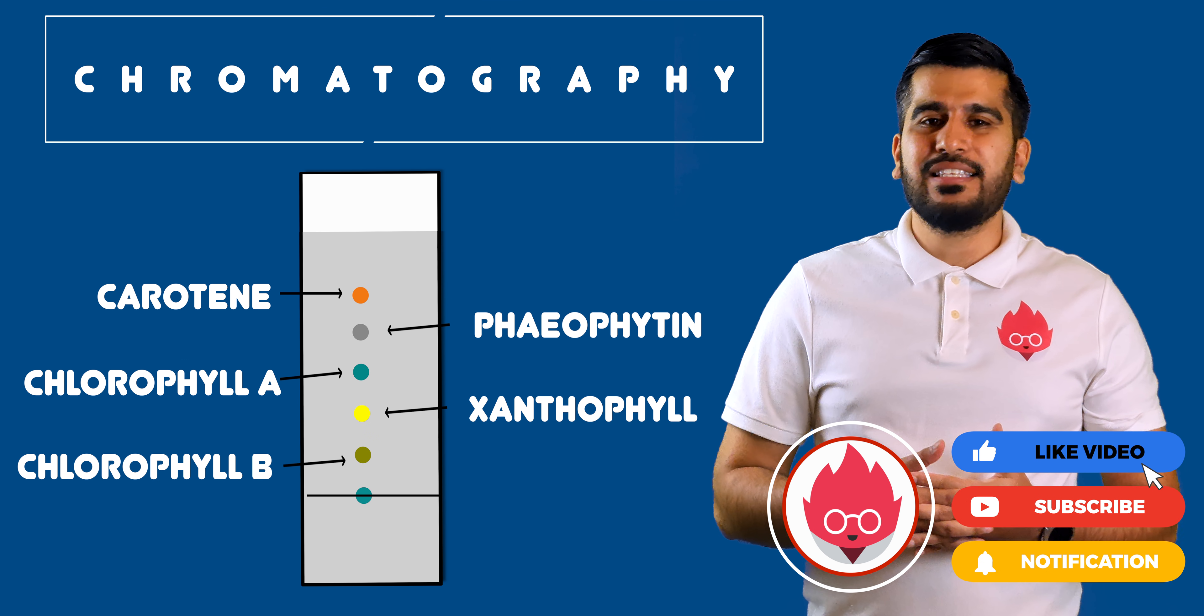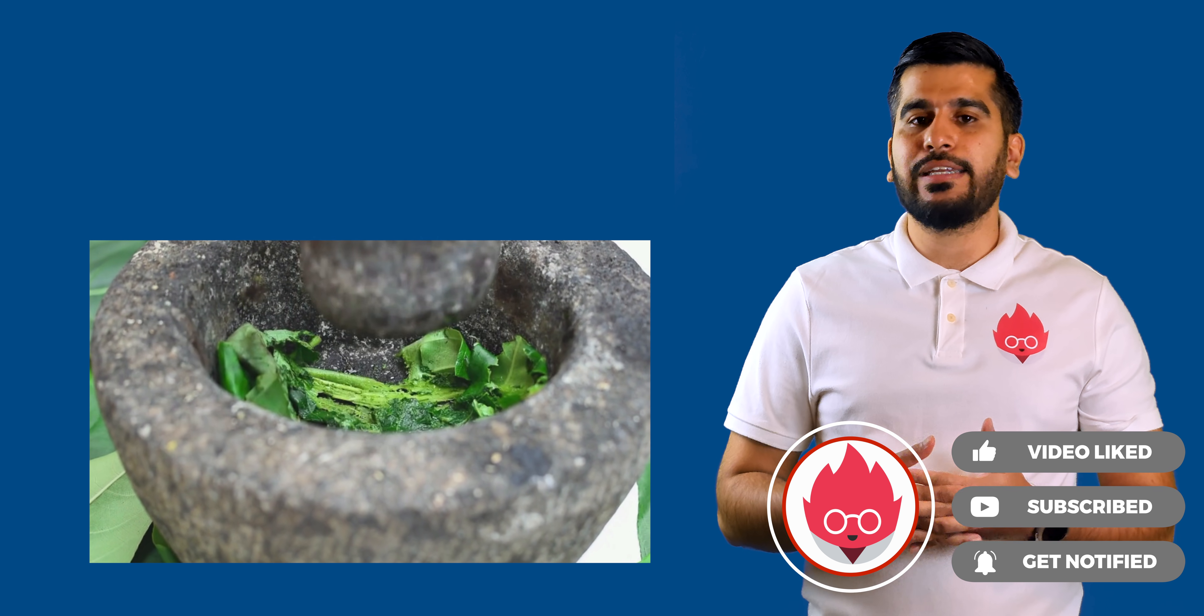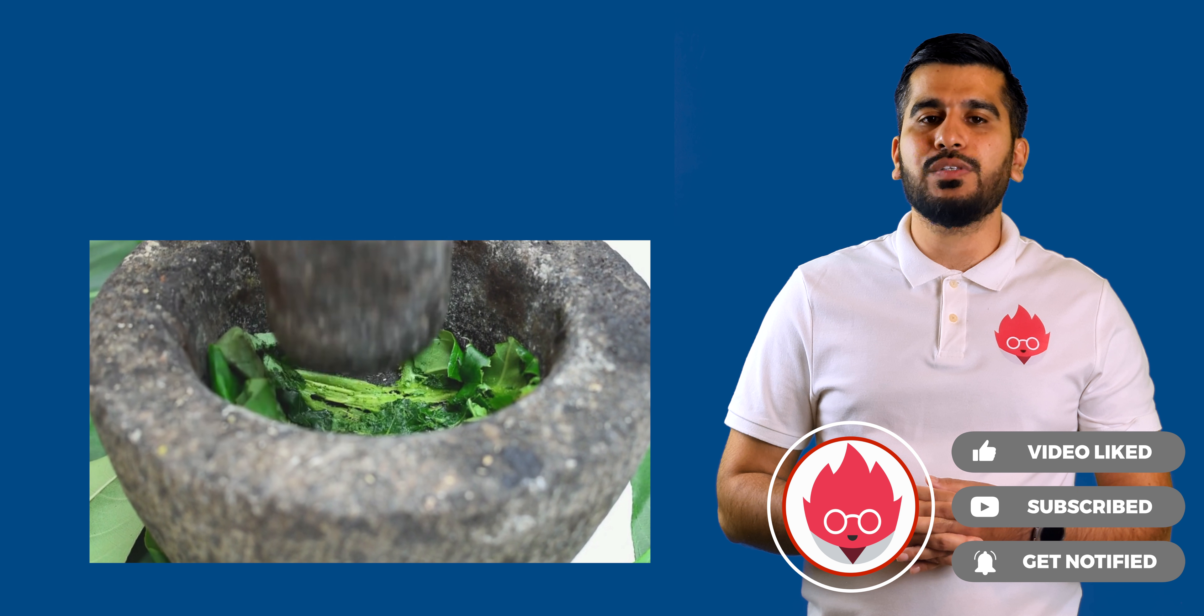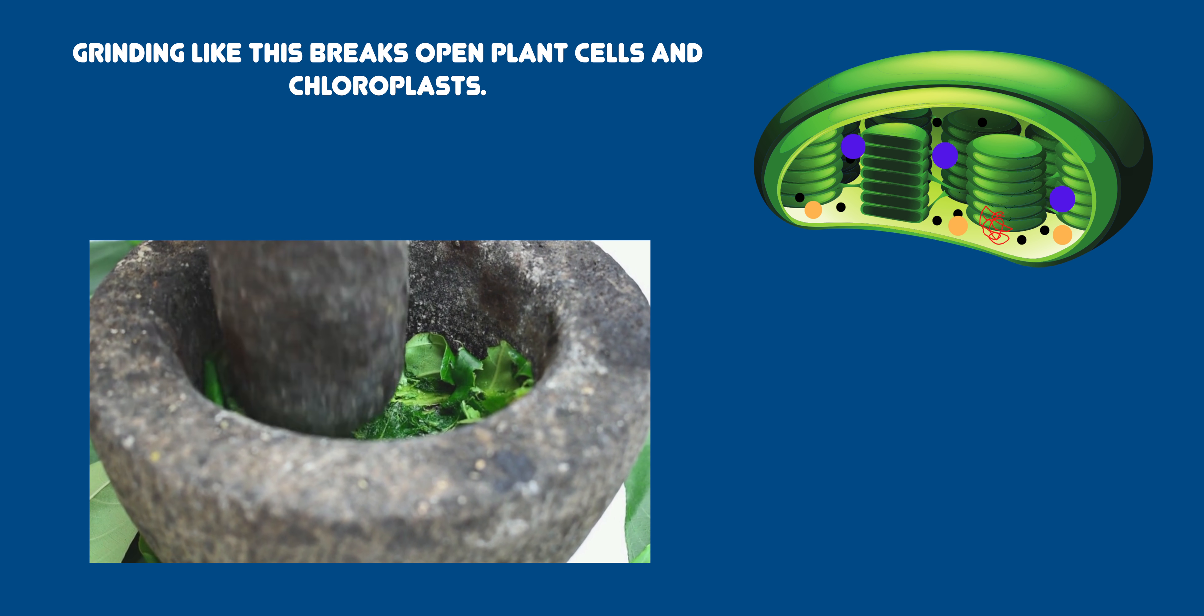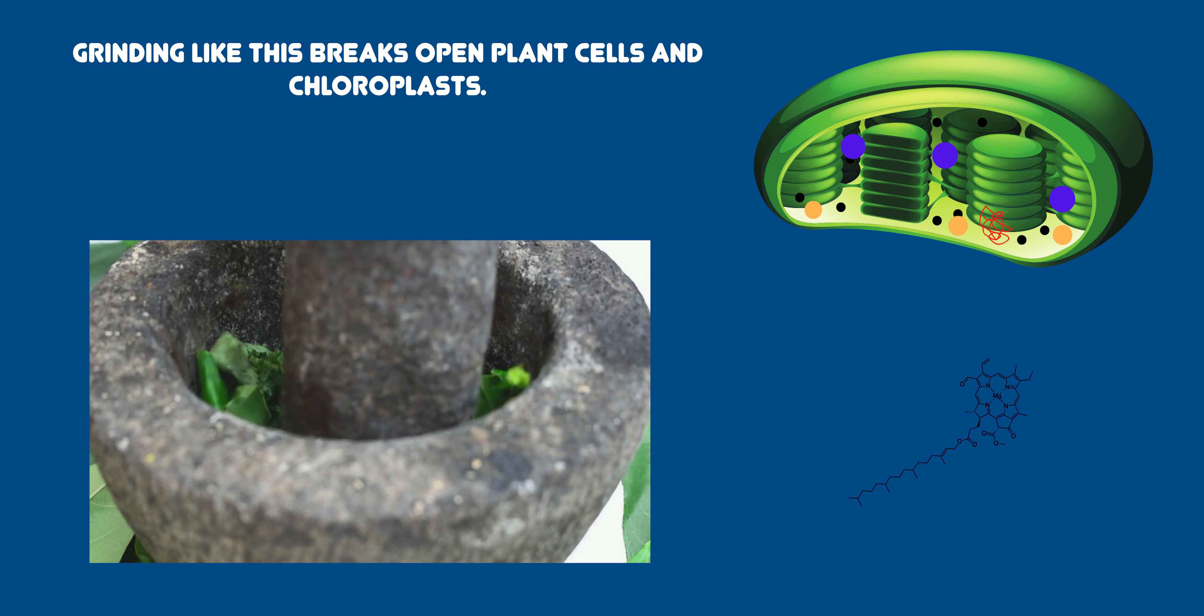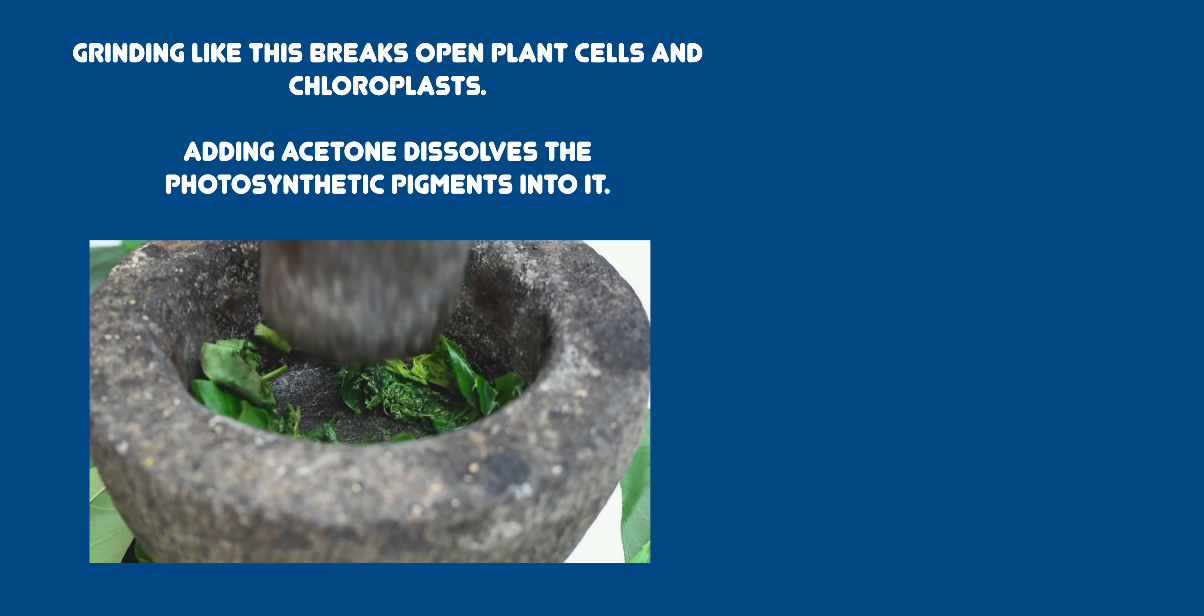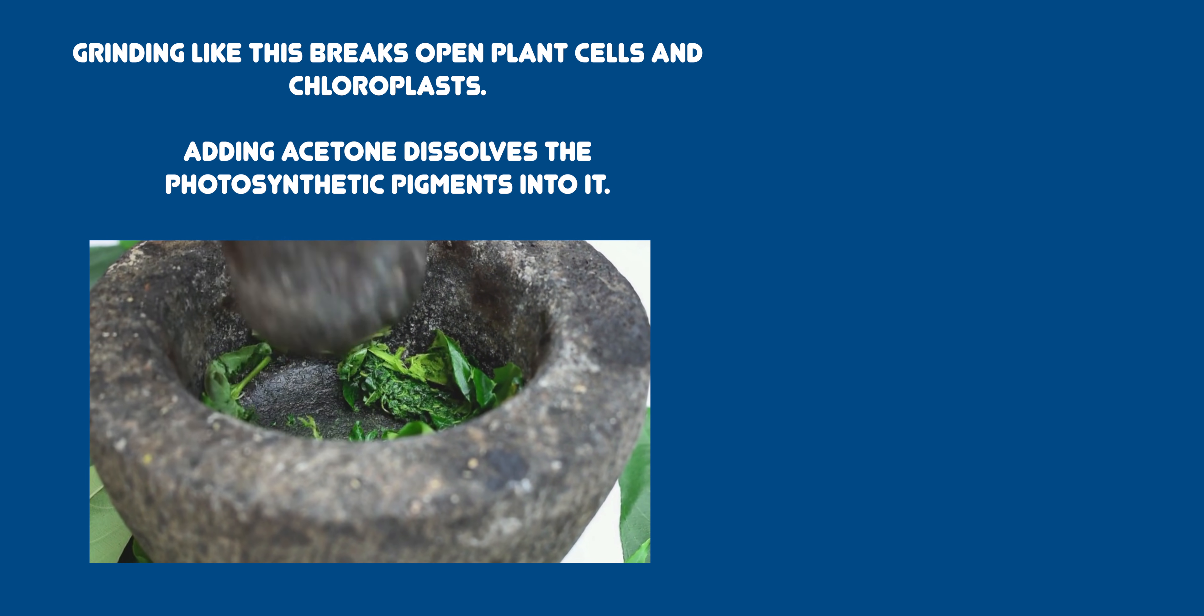We are able to separate photosynthetic pigments using chromatography. To do this we take fresh green leaves and grind the leaves up using acetone and sand. Grinding like this breaks open plant cells and chloroplasts, releasing the pigments. Adding acetone dissolves the photosynthetic pigment into it, which will enable them to move up the chromatography paper later.